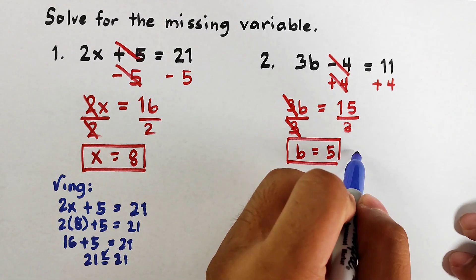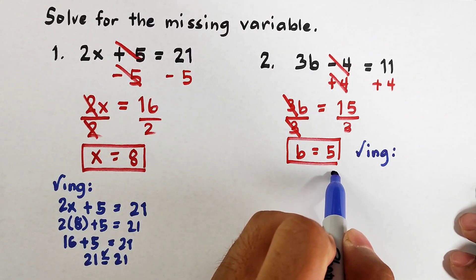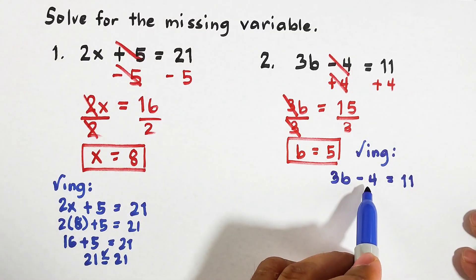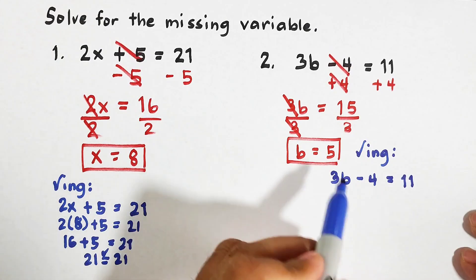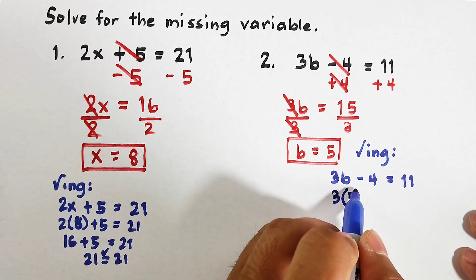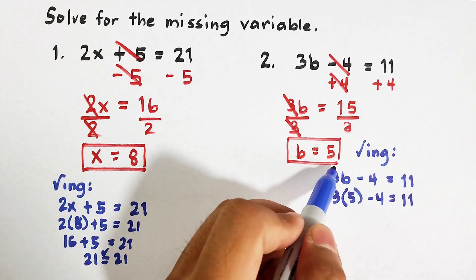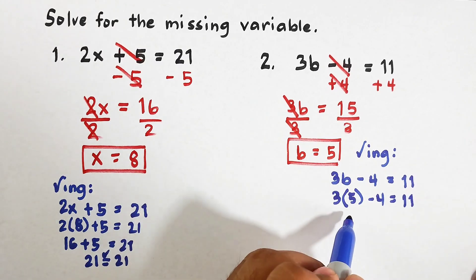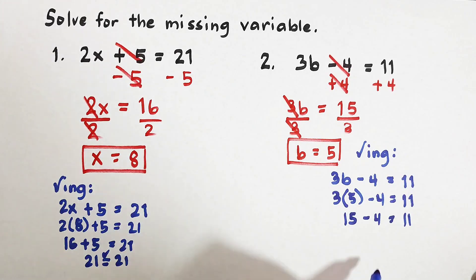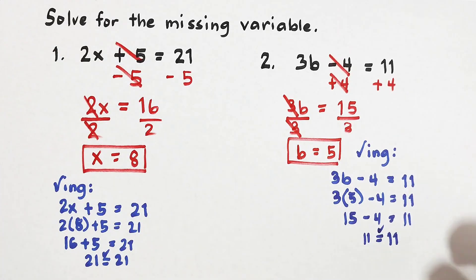Using the original equation: 3b minus 4 is equal to 11. We substitute the value of b, which is 5: 3 times 5 minus 4 is equal to 11. 3 times 5 is 15, minus 4 is equal to 11. 15 minus 4 is 11, and the other side is also 11 — they are equal, meaning the value of b is correct.